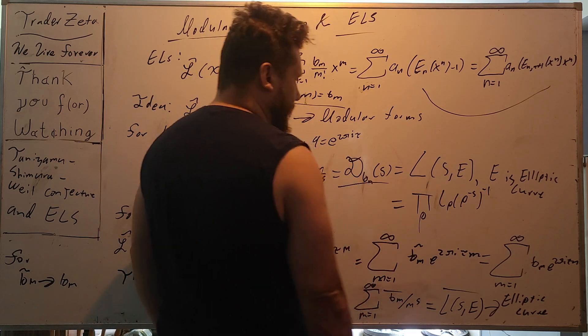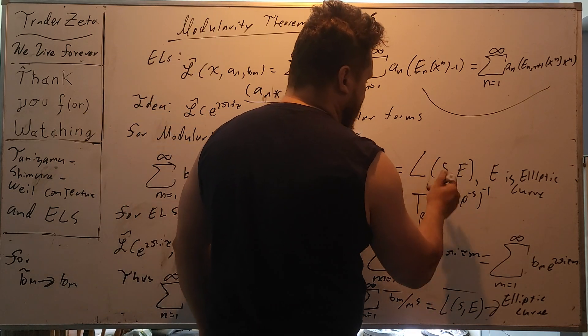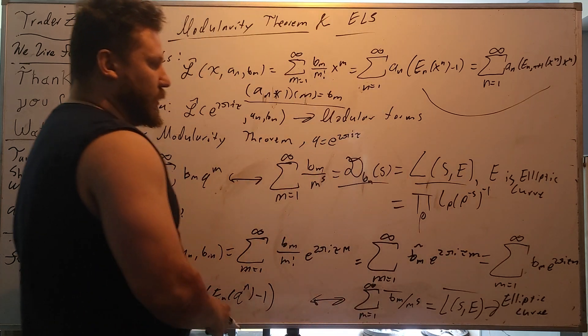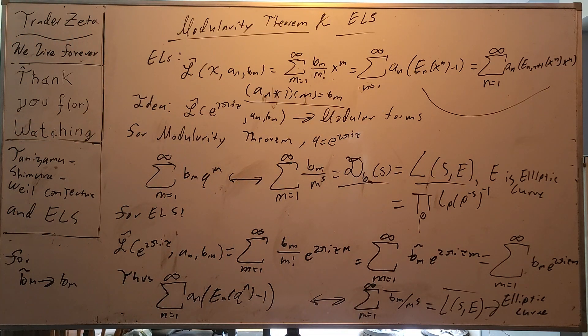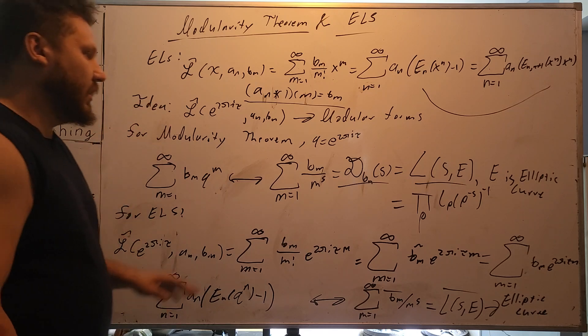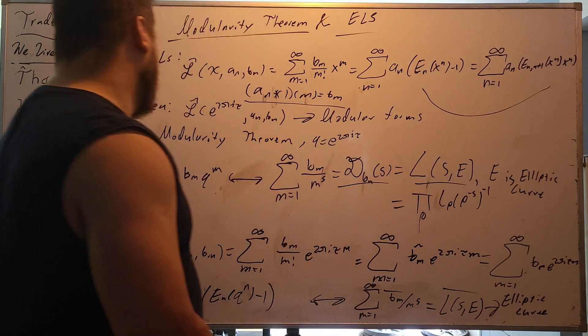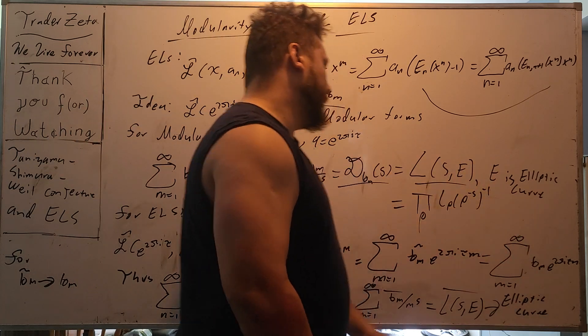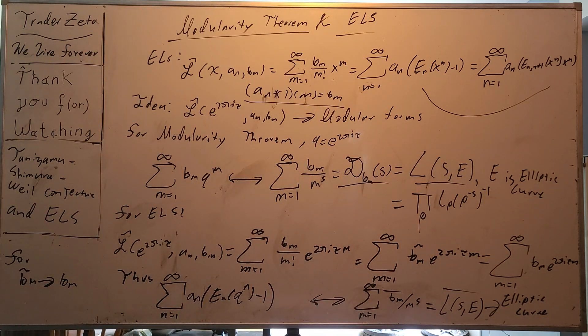This E right here is the associated elliptic curve. And that is, of course, the deep insight of the modularity theorem, is that these modular forms are really deep down on a torus. They can all be mapped to a torus, and then they go straight to elliptic curves. And that's the cool thing.